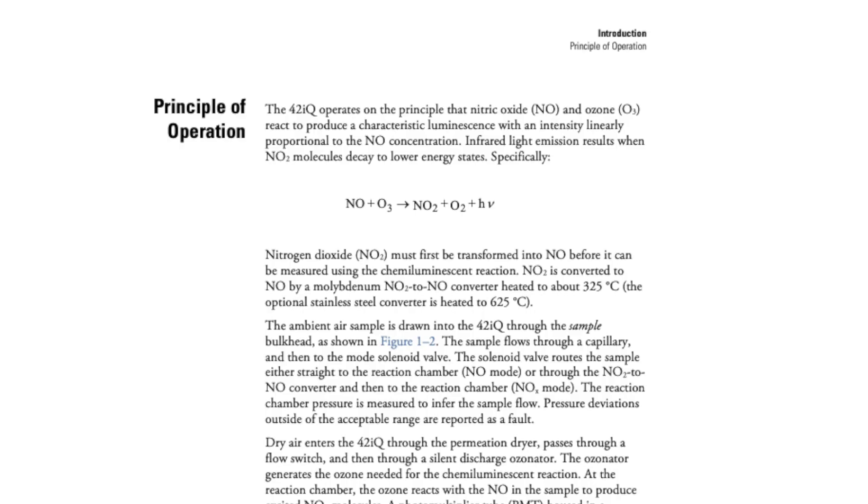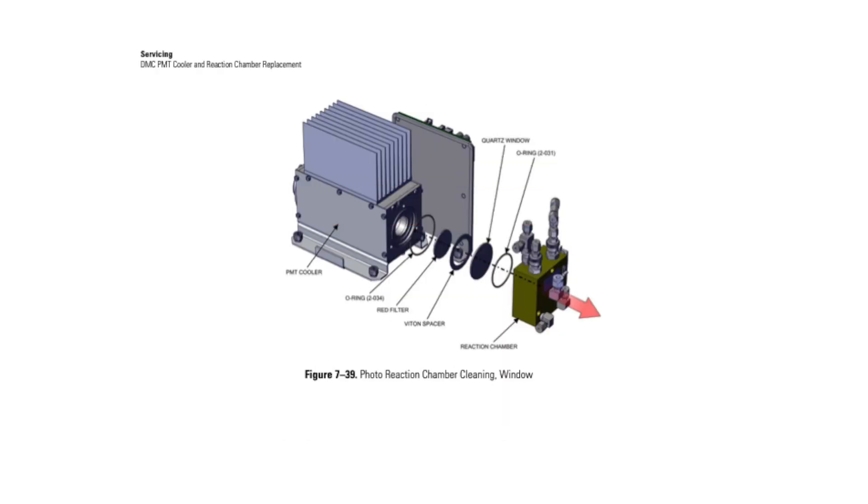The 42iQ operates on the principle of chemiluminescence. When nitric oxides react with ozone, they produce excited nitrous oxides. The excited molecules emit photons in the reaction chamber, and those are recorded by the photomultiplier tube. The light recorded by the photomultiplier tube, or PMT, is then used to calculate the NOx emissions.